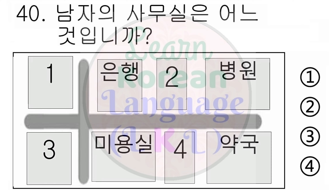그릇이 몇 개 있습니까? 1번. 다섯 개 있습니다. 2번. 여섯 개 있습니다. 3번. 여덟 개 있습니다. 4번. 아홉 개 있습니다.